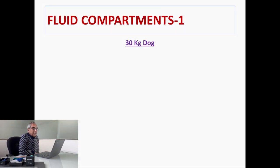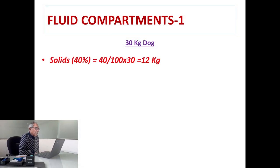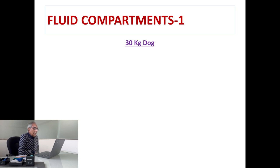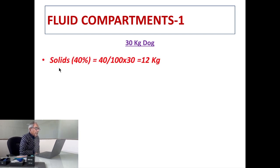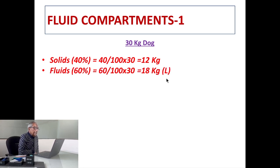Let us take the example of a 30 kg dog and see how much fluid is distributed in different compartments of the body. Suppose we have a 30 kg dog, the solids are 40 percent so it will be 12 kg of solids and 60 percent fluids, 18 kg will be fluid or 18 liters of fluid.